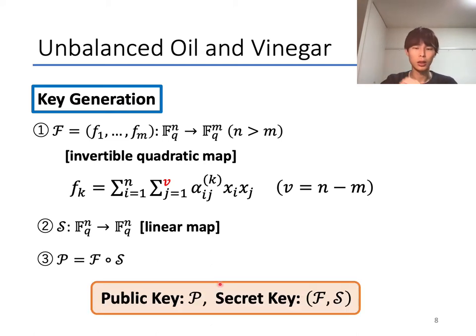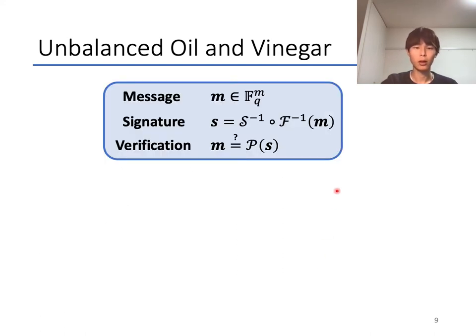And then, the public key is P and the secret key is F and S. In UOV, given a message m to be signed, we generate the signature s by computing S^{-1}(F^{-1}(m)). And verification is performed by confirming whether m equals P(s) or not.